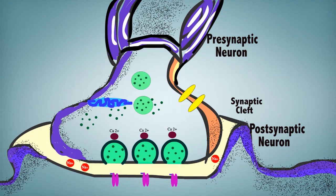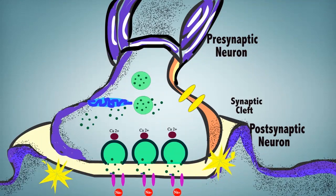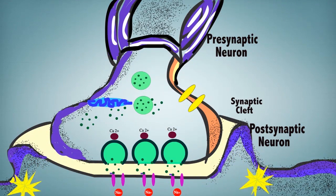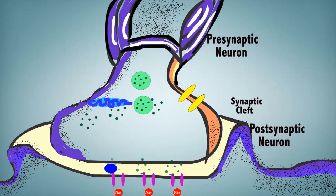Neurotransmitters bind to the receptors on the postsynaptic neuron to open the chemically-gated sodium channels. The diffusion of sodium ions into the postsynaptic neuron depolarizes it towards the threshold for triggering an action potential. The neurotransmitters are removed or degraded.